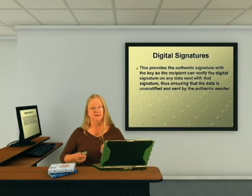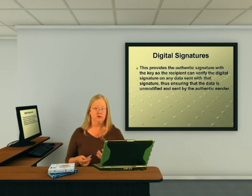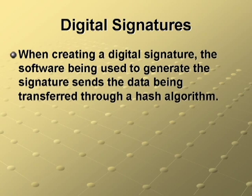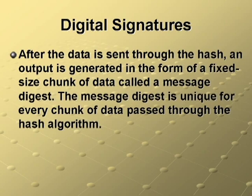If the data were modified, the digital signature would be damaged by that modification, and that would then prove that the integrity of the data has been compromised. When creating a digital signature, the software being used to generate the signature sends the data being transferred through what's known as a hash algorithm. It's important to remember that hashing algorithms are not used to encrypt data. After the data is sent through the hash, an output is generated in the form of a fixed-size chunk of data called a message digest.